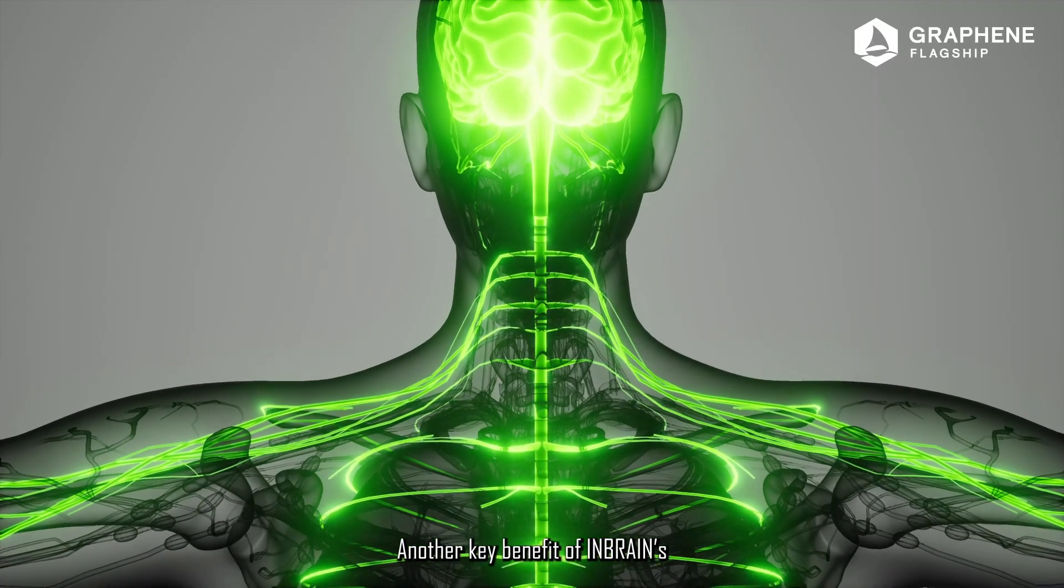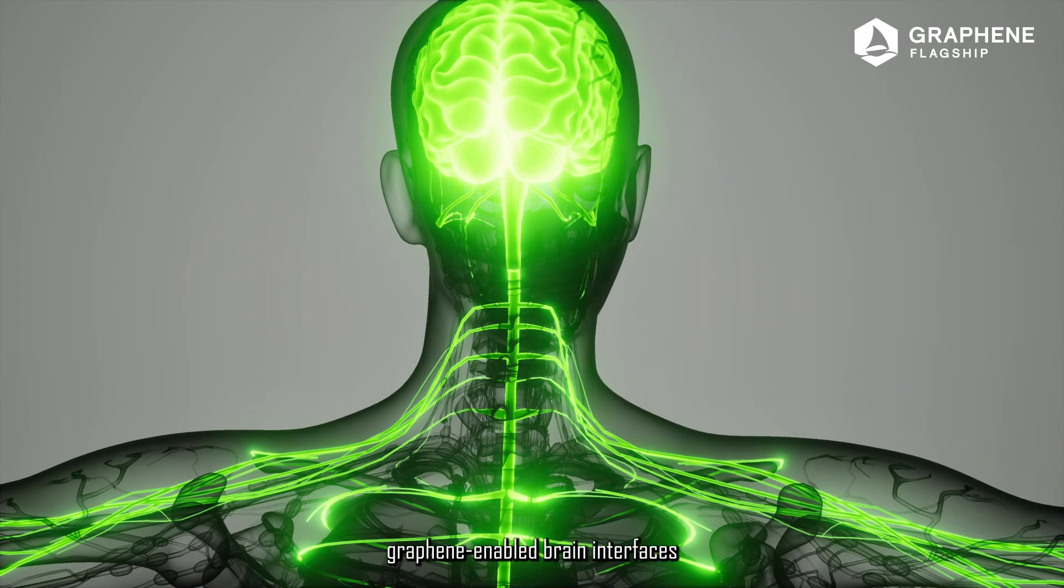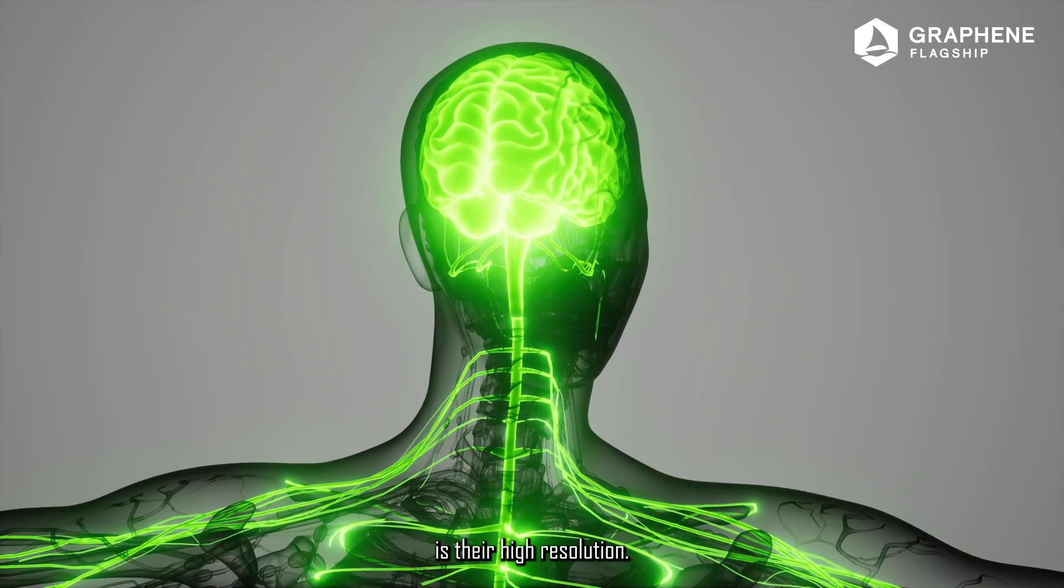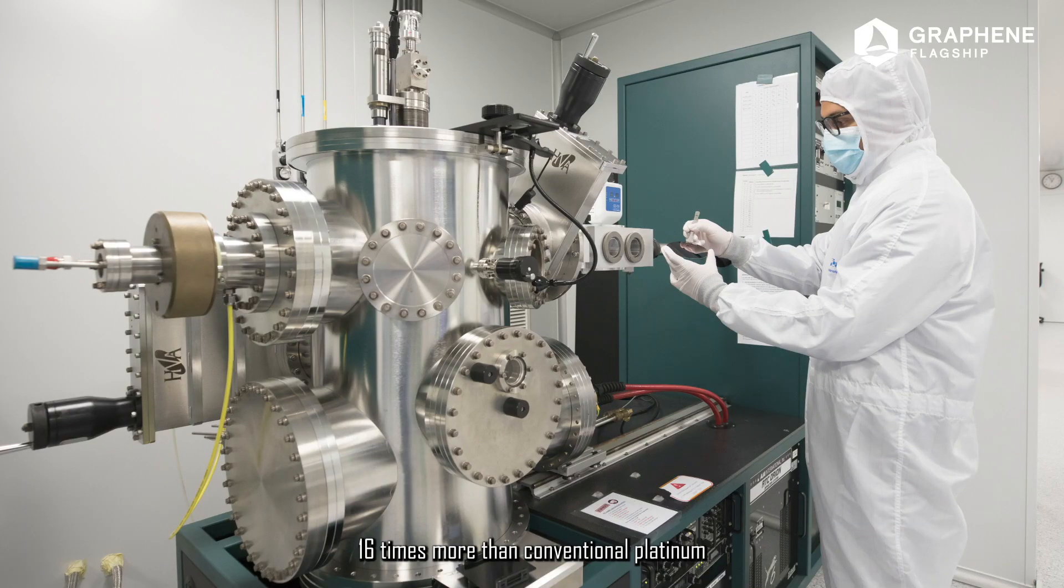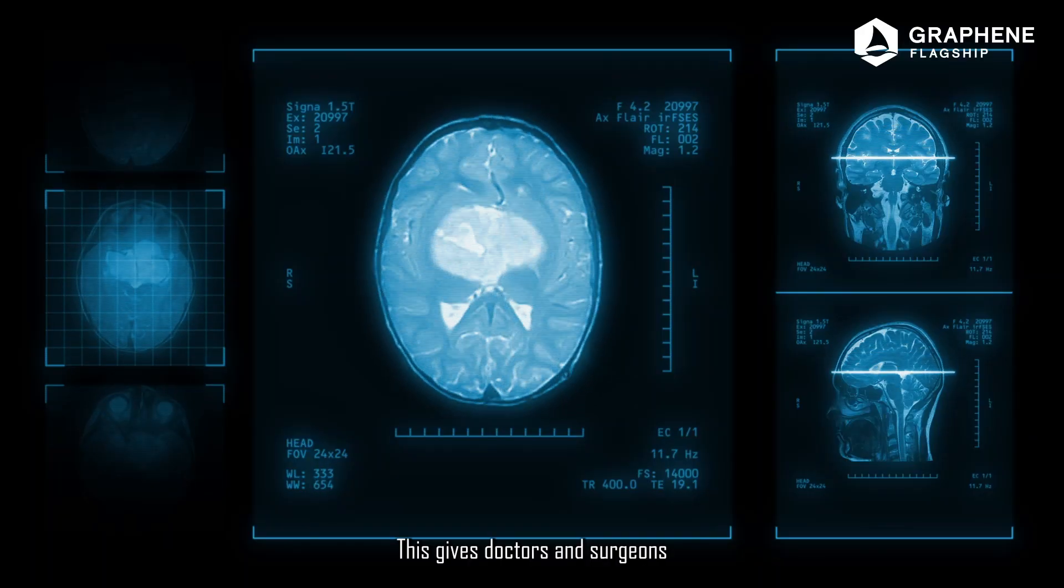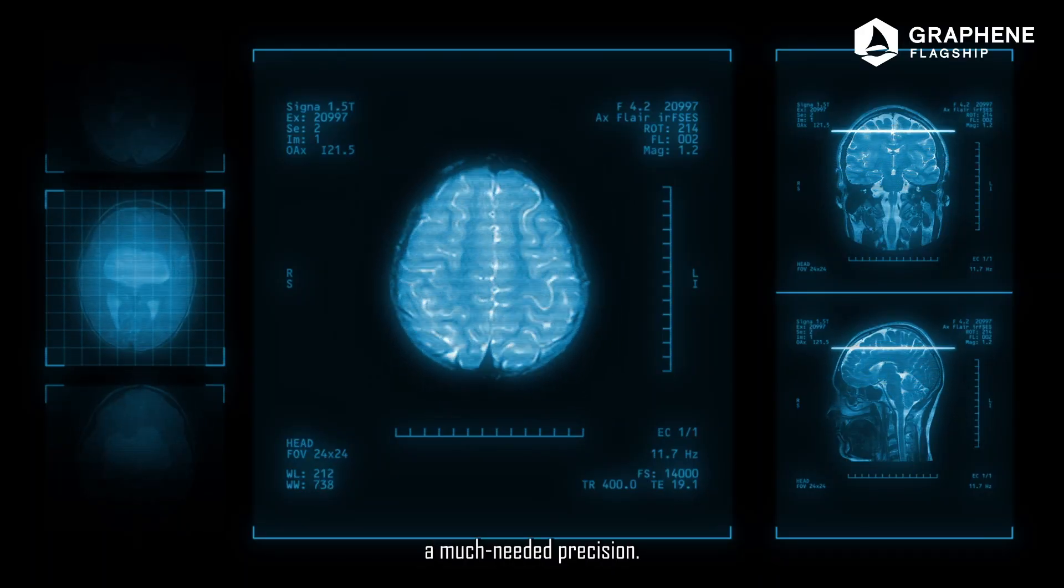Another key benefit of InBrain's graphene-enabled brain interfaces is their high resolution. Graphene devices offer 64 sensing dots, 16 times more than conventional platinum brain mapping grids. This gives doctors and surgeons much-needed precision.